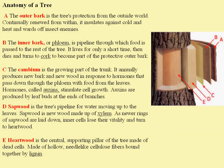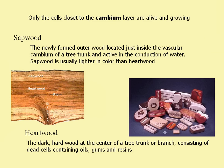It's important to note that only the cells closest to the cambium layer are actually alive or growing, so the cambium is really the only living part of the tree trunk. Sapwood is the newly formed outer wood just inside of the vascular cambium and is usually lighter in color than the heartwood, which is often the part of the tree used for ornamental wood design, crafts, and boxes.